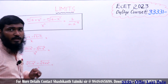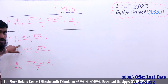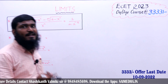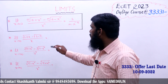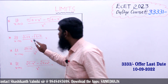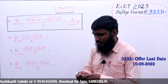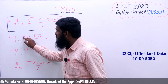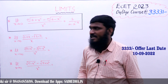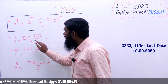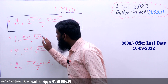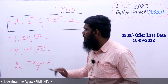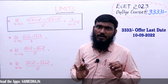Now let us see the first question: limit x tends to 0 of square root of (2 + x) minus square root of (2 - x), divided by x. Let us check the conditions. Both terms have a square root — that condition is satisfied. The x powers are the same, and the a value is also the same.